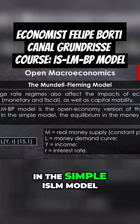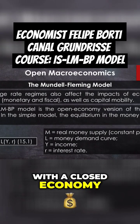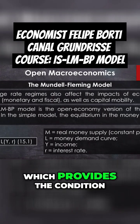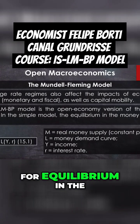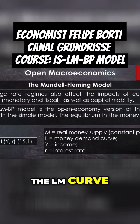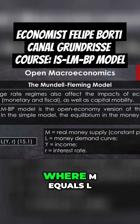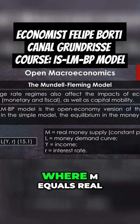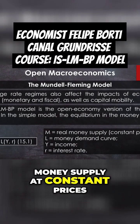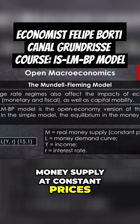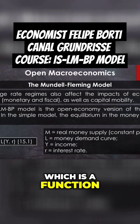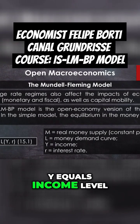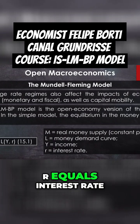In the simple IS-LM model, with a closed economy, we have equation 15.1, which provides the condition for equilibrium in the money market — the LM curve — where M equals L as a function of Y and R. Here, M equals real money supply at constant prices, L equals the money demand curve, which is a function of income Y and interest rate R, Y equals income level, and R equals interest rate.